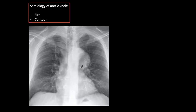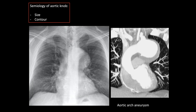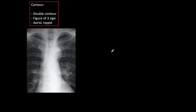Looking at the aortic knob is very important. The basic semiology of the aortic knob: first, look at the size — if it is increased in isolation, it is very obvious and represents an aortic arch aneurysm, confirmed with enhanced CT. For the contour, look at three things: first, the double contour, which we already mentioned; second, the figure-of-three sign, which is practically pathognomonic of coarctation.